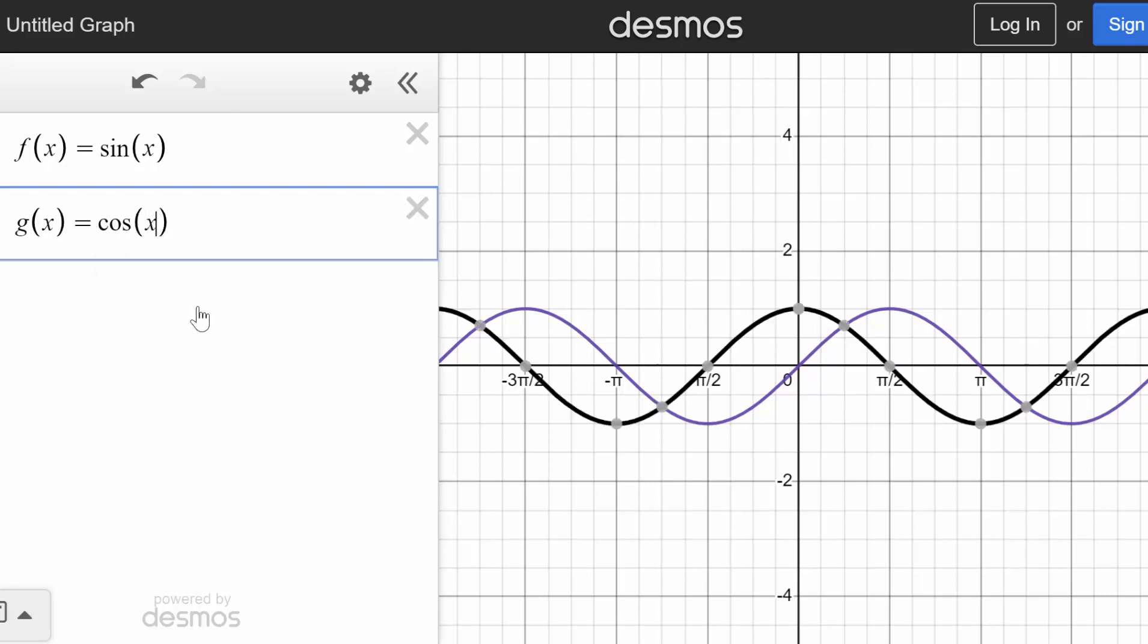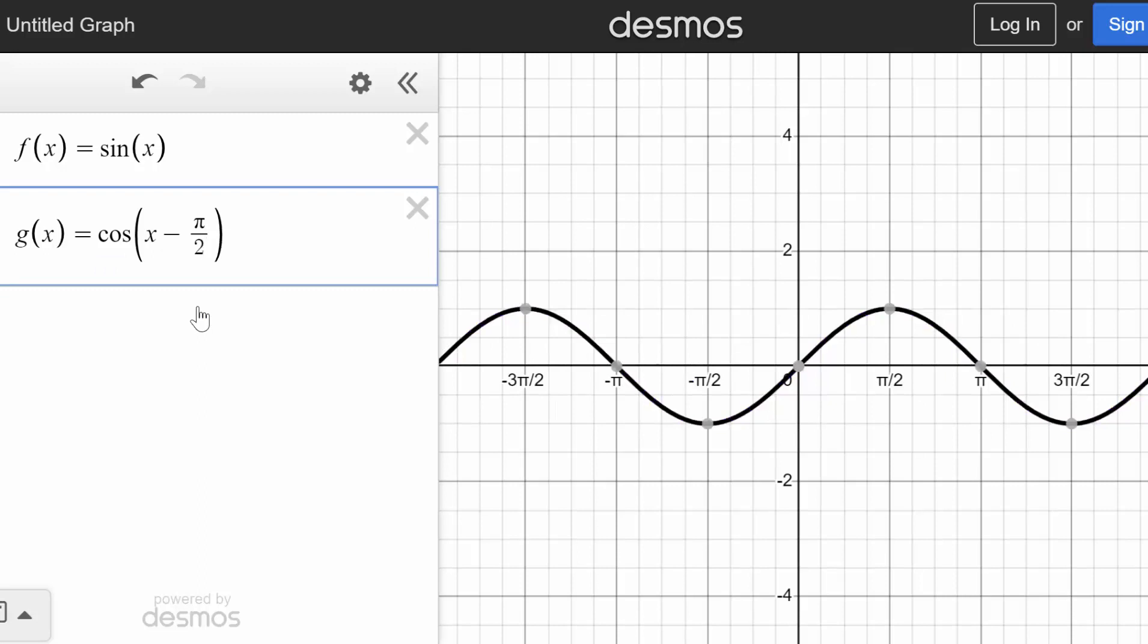And we can see this if we add or subtract pi over 2, depending which function we're looking at on the inside. So if we, on the cosine, subtract pi over 2 from our independent variable, then notice it shifted so that it fits perfectly on top of the function sine of x.